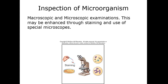Bacteria require the compound light microscope at about 1,000× magnification to be seen. Viruses, being ultramicroscopic, require the electron microscope, which achieves much higher magnification — anywhere from 10,000 to 100,000× what the unaided eye can detect.